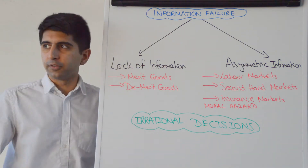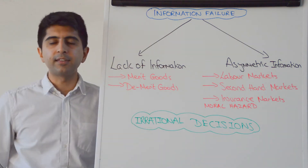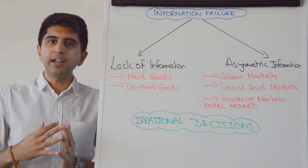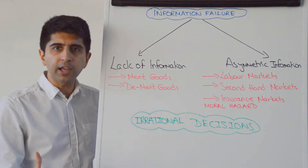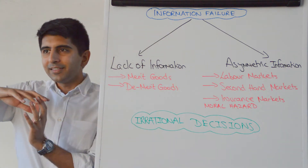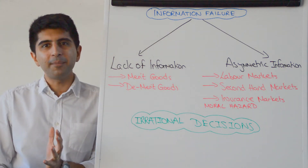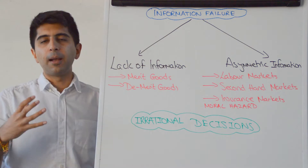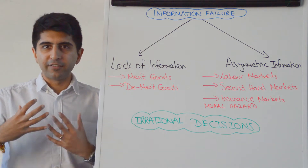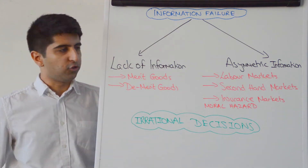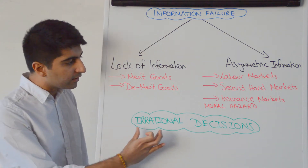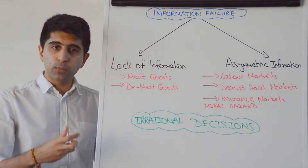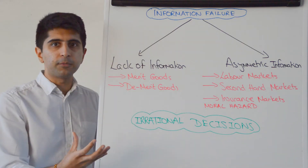If it's fruit and vegetables, if it's healthy exercise — these are all merit goods but are under consumed, you could argue, because there is a lack of information regarding how good those products are for the individual consumer. As a result, irrational decisions are made when it comes to consumption.